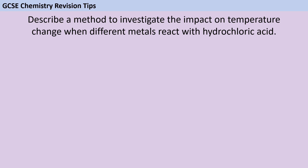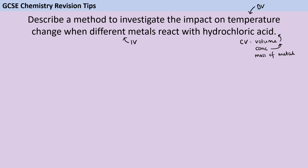Here, the independent variable is going to be the different metals being added — the clue is the word 'different'. Anything that is different or changing will be your independent variable, and you need to make sure you have mentioned changing it. The dependent variable is the thing you measure, which here is the temperature change. Your control variables are all the other things you keep the same: the volume of hydrochloric acid, the concentration of the hydrochloric acid, and the mass of metal being added.